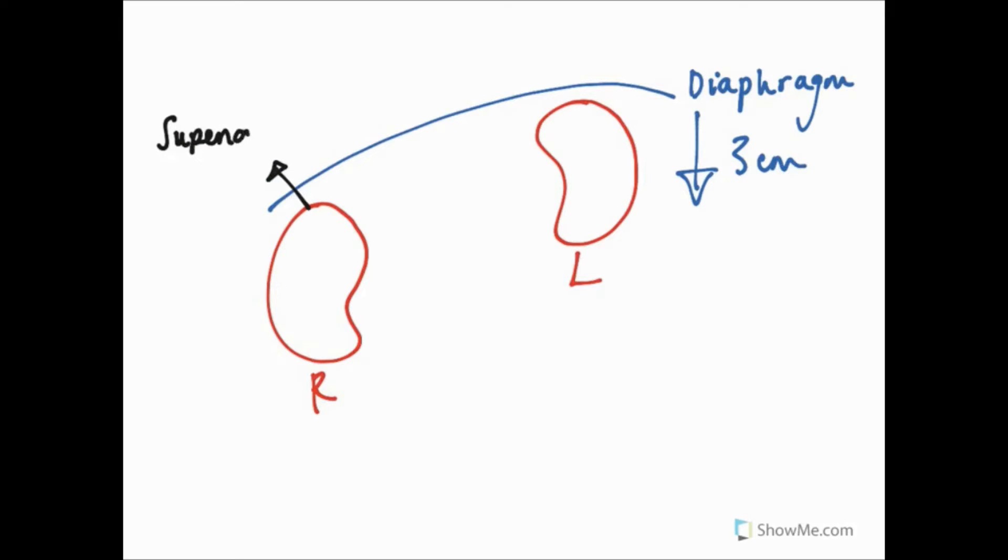So as you can see the kidneys are bean shaped. Each kidney has a superior pole, an inferior pole and an anterior and posterior surface. The lateral border of the kidney is convex and the medial border is concave.